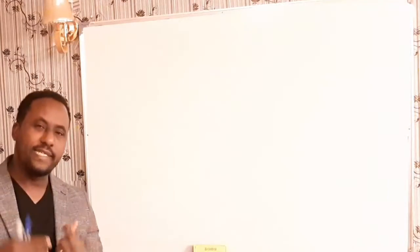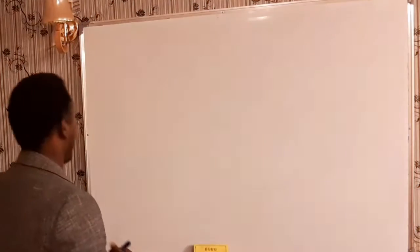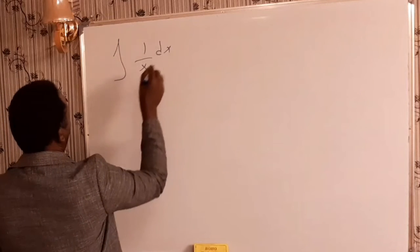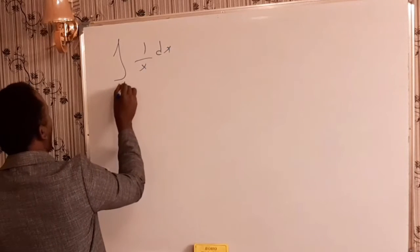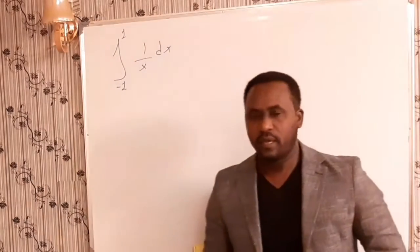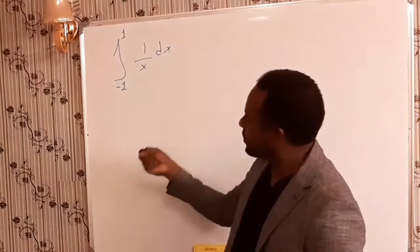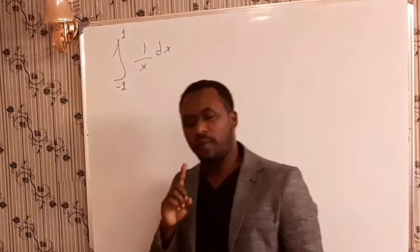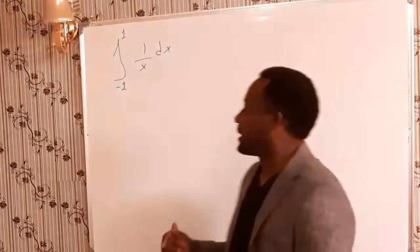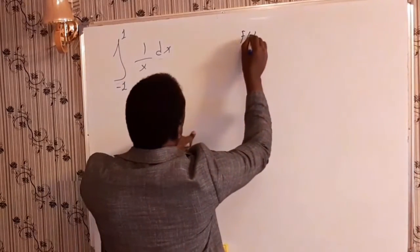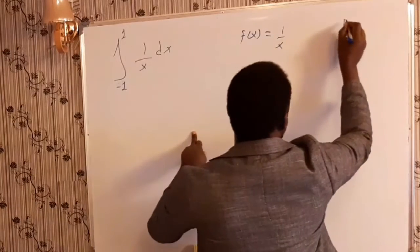How to find the area of any irregular figures. To show this, let's consider one particular example that will clarify how to determine the area of any irregular figures. This is the first example: let's evaluate the integral of 1 over x dx, where x is running from minus 1 to 1. How can we determine the integral of this formula?